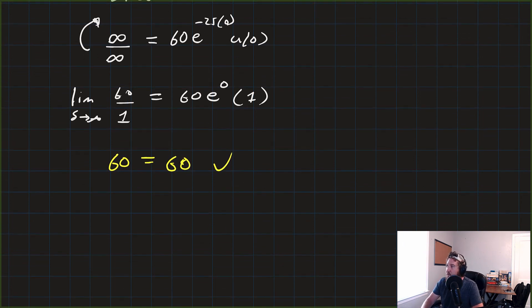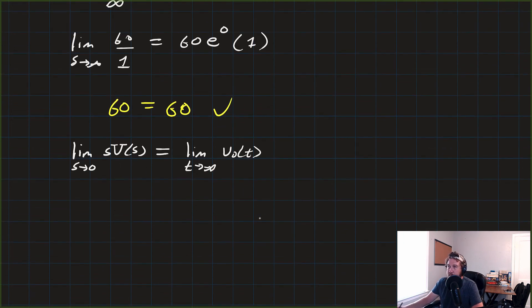So that side of the theorem holds, and we're good to go. Let's take a look at the other side, which says that now the limit as S approaches 0 of S, V of S, is equal to the limit as T approaches infinity of V-naught of T. So let's write it out, the limit as S approaches 0 of 60S over S plus 25 is equal to the limit as T approaches infinity of 60e to the minus 25T times U of T.